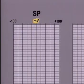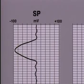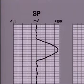First, we see that the SP curve is scaled in millivolts, with each division of the scale usually representing 20 millivolts. A negative reading will cause a deflection to the left, and a positive reading will cause the curve to deflect to the right.